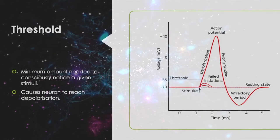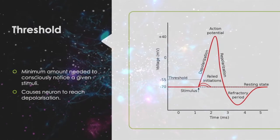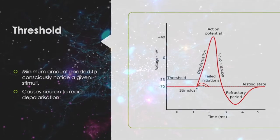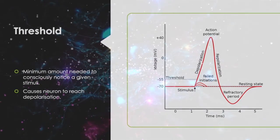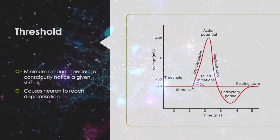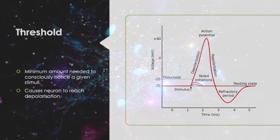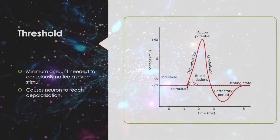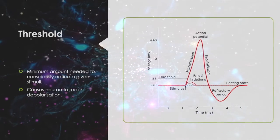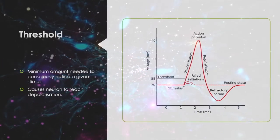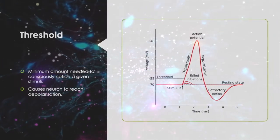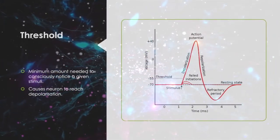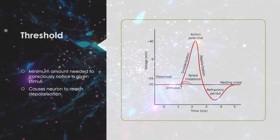A threshold is the minimum amount that is needed to consciously notice a given stimulus. This causes the neuron to reach depolarization.